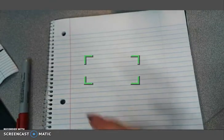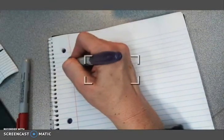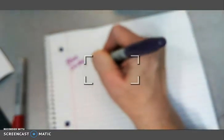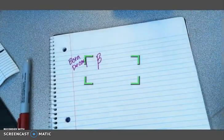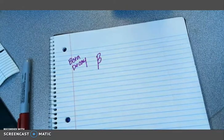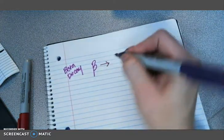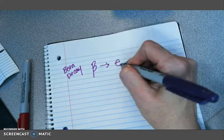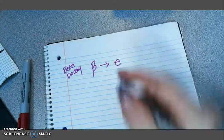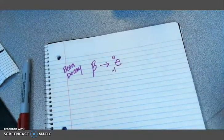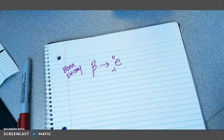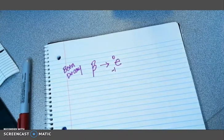Beta decay is more energetic. And we write beta decay with the Greek letter beta. What's happening with beta decay is it's actually releasing a beta particle, which is the same as an electron. It has an atomic mass of zero and it only has a negative one charged bottom. So it's like it doesn't have any protons, no neutrons, just negative one.